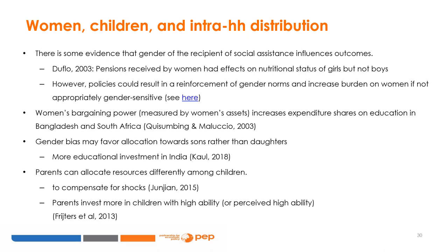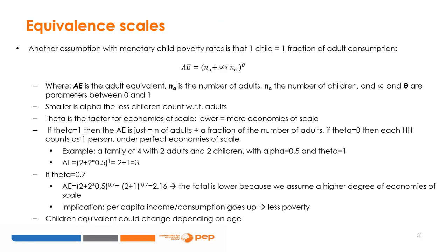There is also evidence that parents allocate resources differently among children — for example, to compensate for shocks, or to invest in the child with the highest perceived ability. Equivalence scales are a tool used when analyzing data to assign household income or consumption between members under the assumption that there are some economies of scale. Economies of scale are important because some goods are shared by all family members — for example, a family of four does not need four TVs — and the assumption that children consume only a fraction of one adult. Equivalence scales usually produce adult equivalents, which is a standardized unit of the number of household members. The general formula for adult equivalents is: AE = (N_A + α × N_C)^θ, where alpha and theta are parameters that range between 0 and 1.